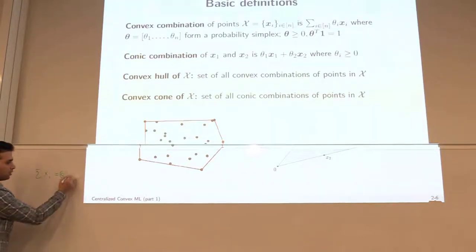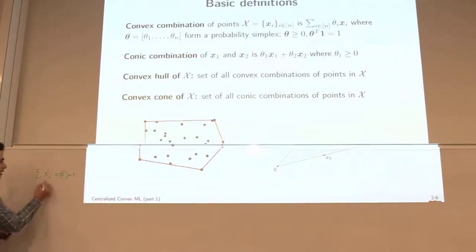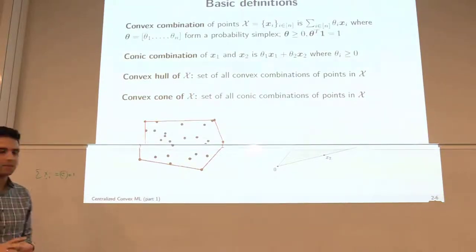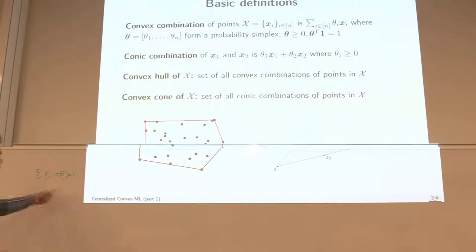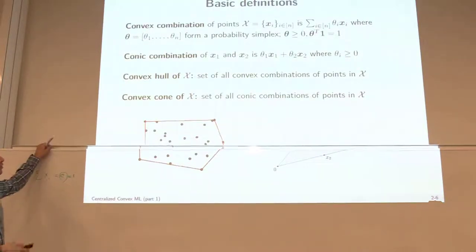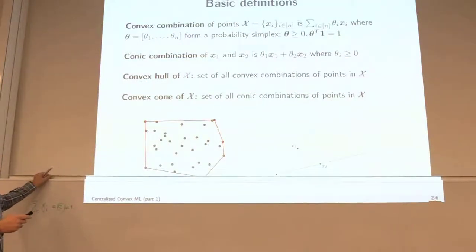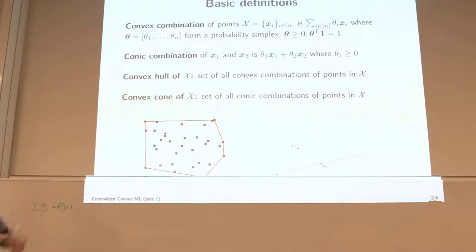And if this constant c is just one, then we call it a probability simplex. Essentially, these elements belong to some probability vectors that sum up to one. So the individual elements should be larger than zero — this is a vector of all ones — and theta is a vector of theta_1 up to theta_n. If the summation goes to one, we call it a probability simplex.